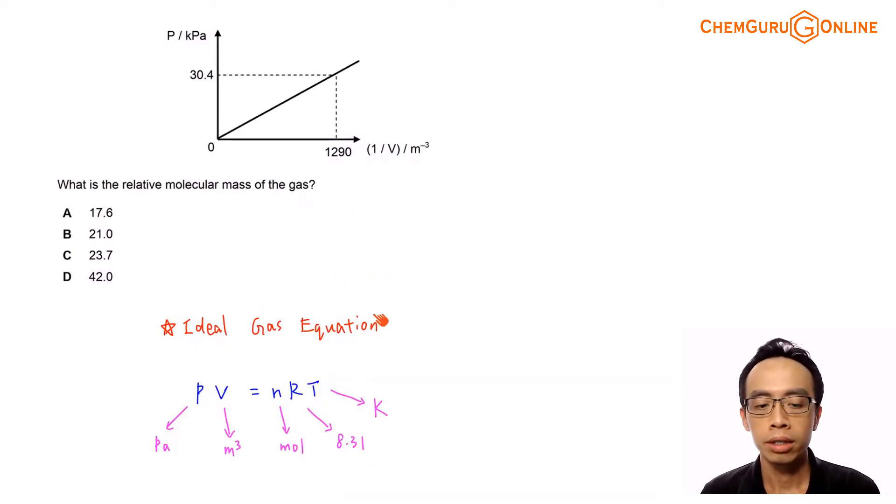Now ideal gas equation is here. PV equals to nRT. P for pressure in Pascal. V for volume in meter cube. N is the number of moles. R is my gas constant. The value is 8.31. This value is also inside the data booklet, so we can refer to that. T is temperature in terms of Kelvin.